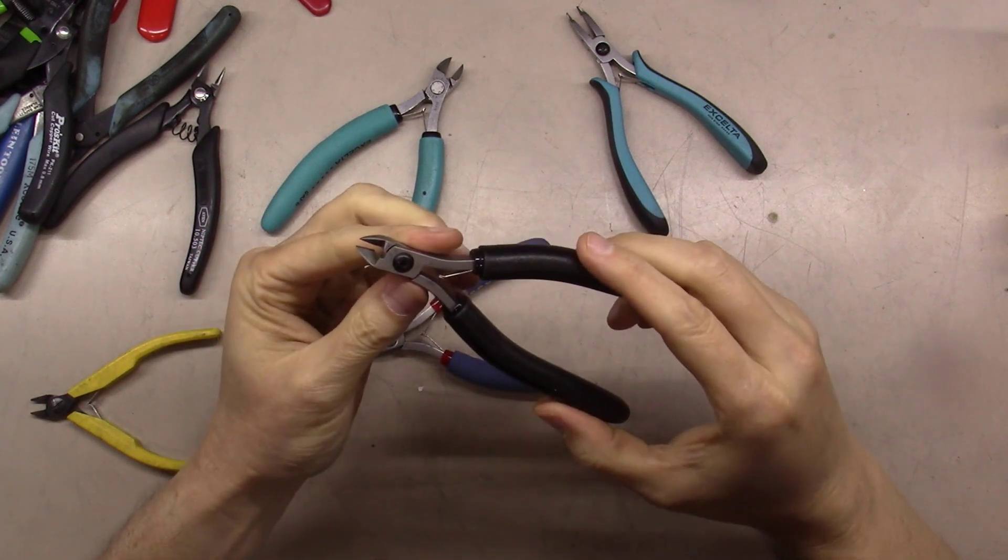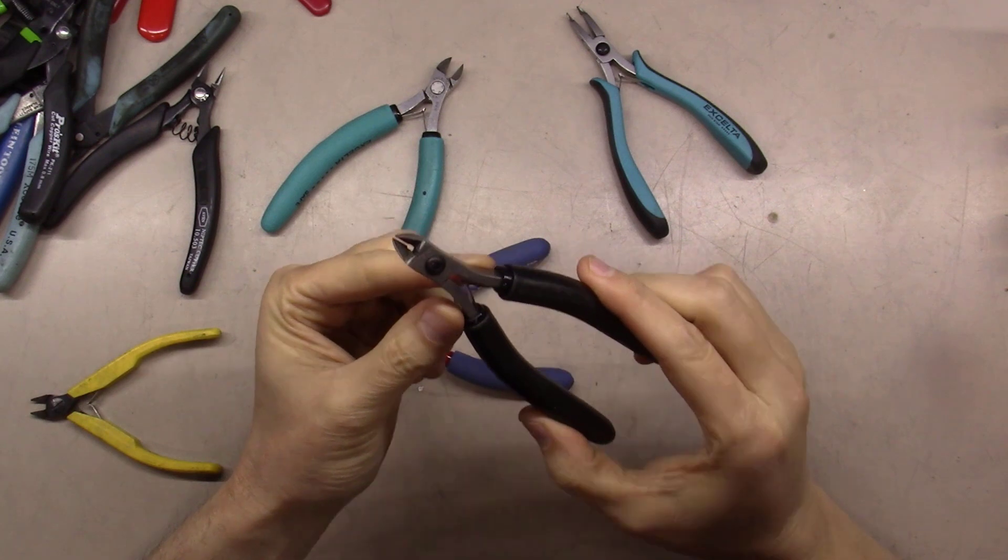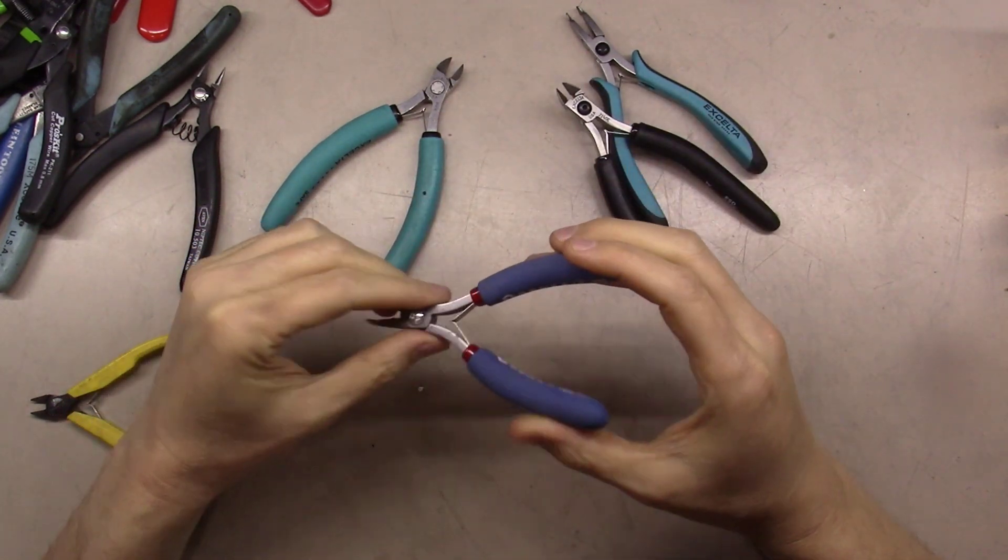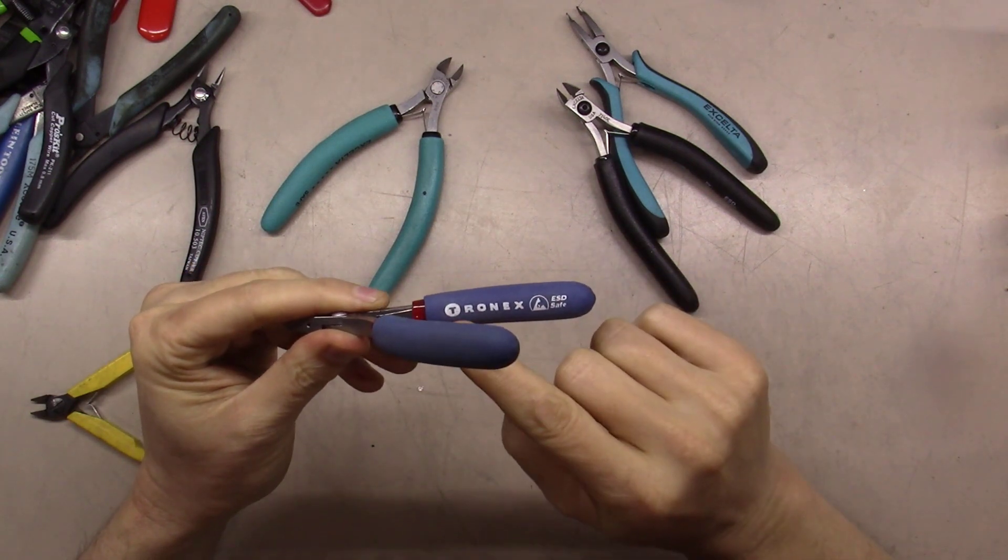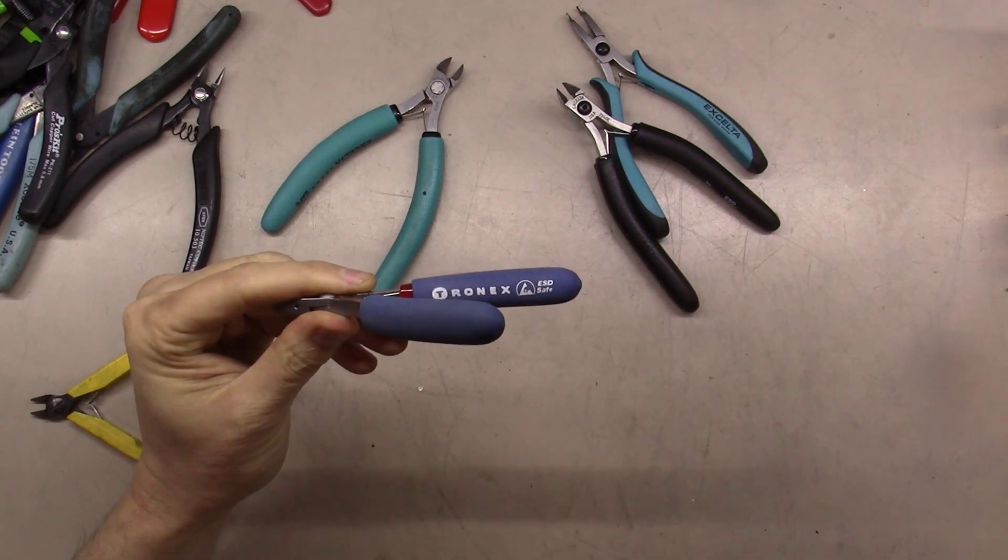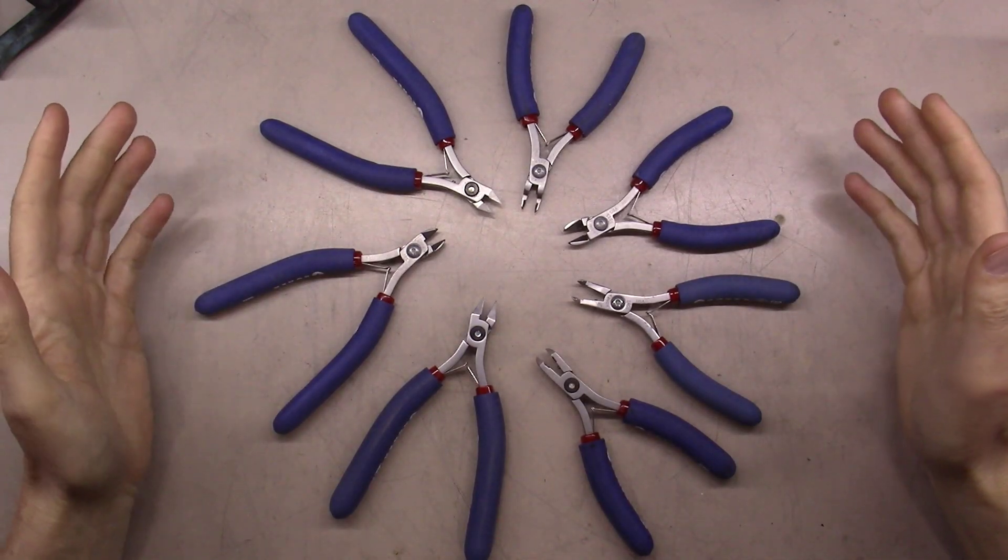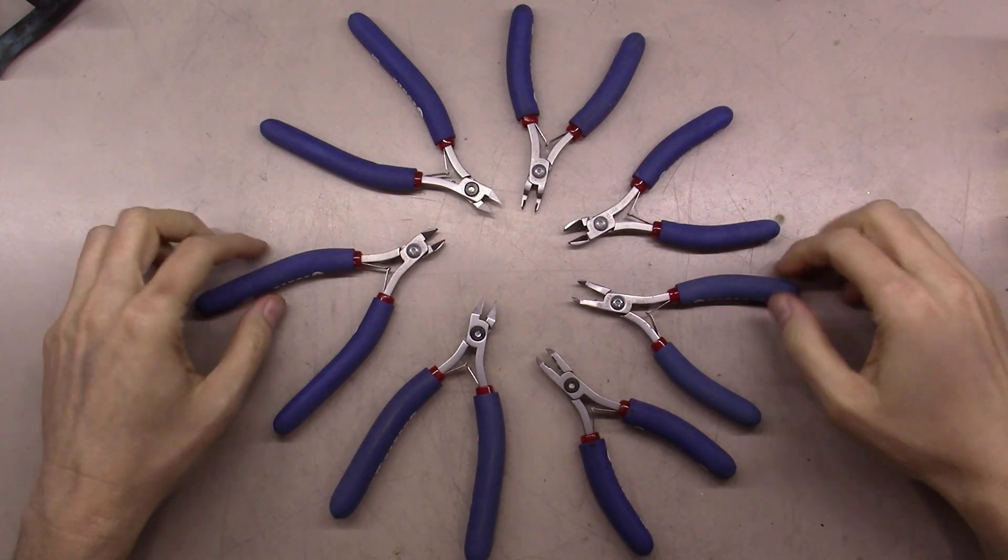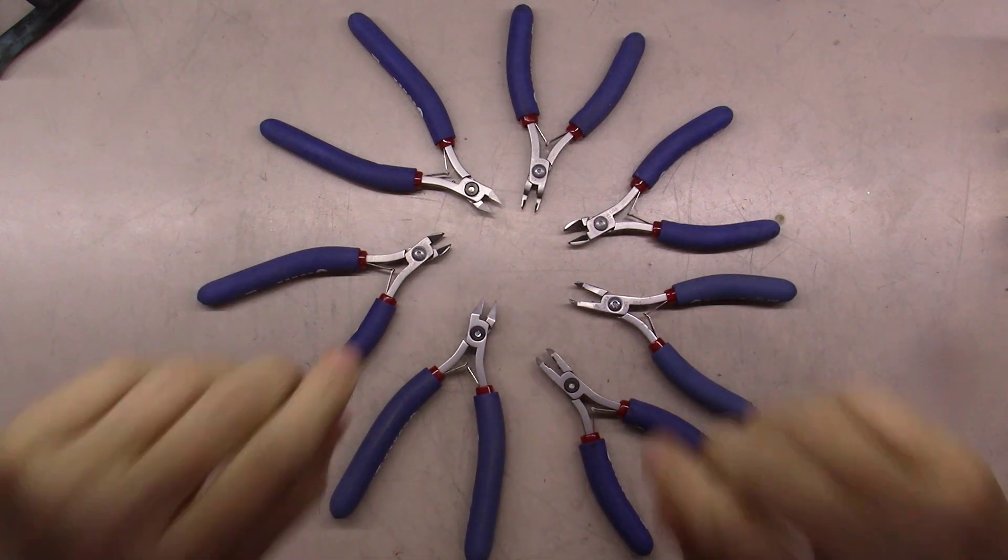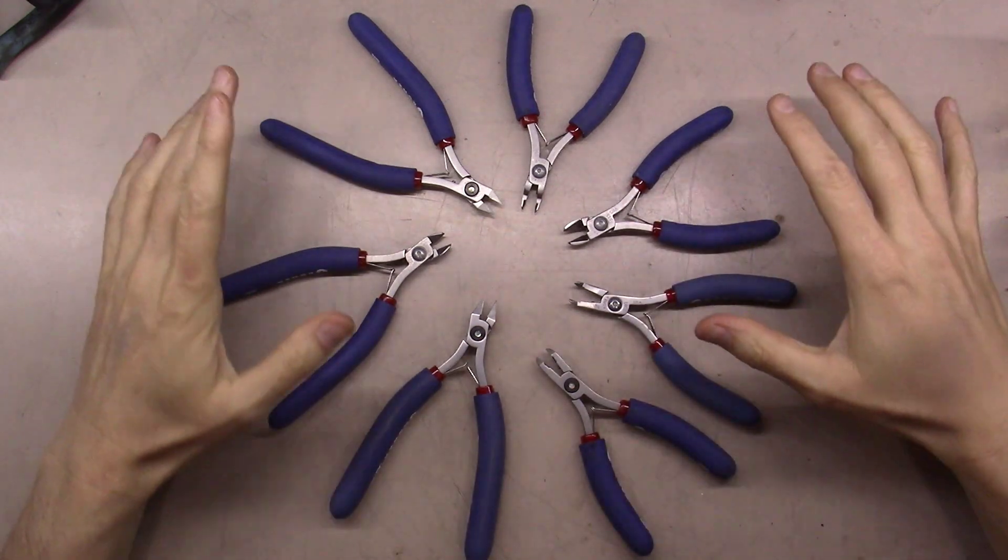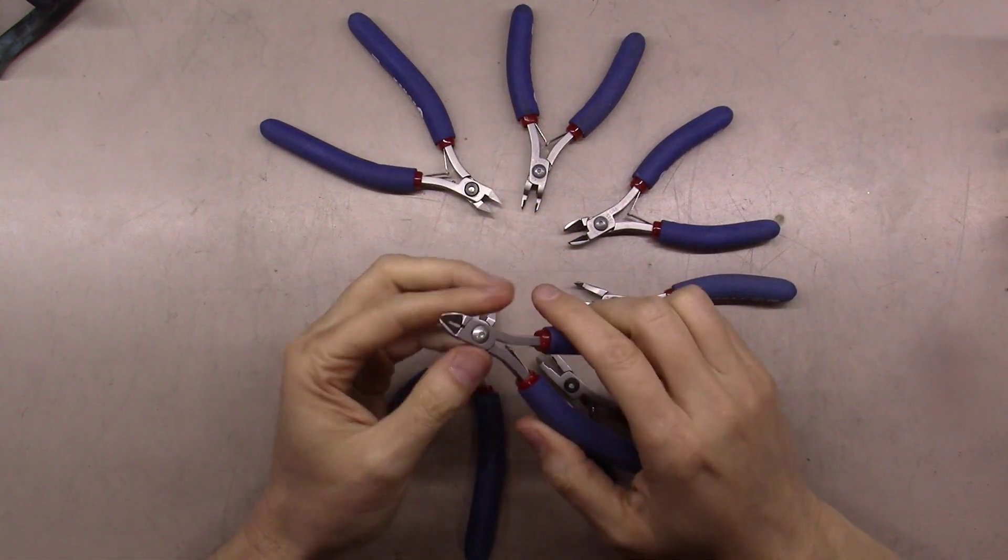There are another pair of Lindstroms - excuse me, Excelta - made by the same company Excelta. Again, you can tighten them down. These do a good job. But by far my favorite tools that I've run into right recently is a company called Tronex. And thus what I will call the new circle of life on my bench. I am acquiring these tools like crazy as of recently. I absolutely love them.